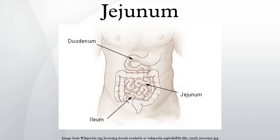The geodunum is the middle section of the small intestine in most higher vertebrates, including mammals, reptiles, and birds. In fish, the divisions of the small intestine are not as clear and the terms middle intestine or midgut may be used instead of geodunum.